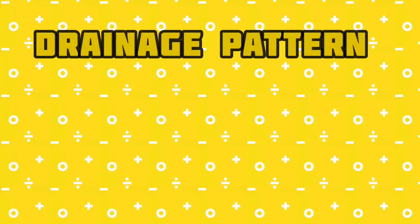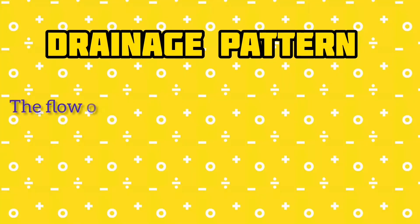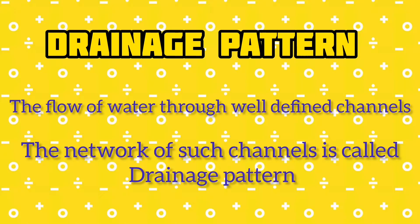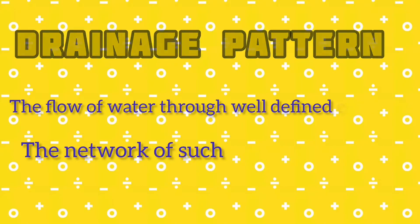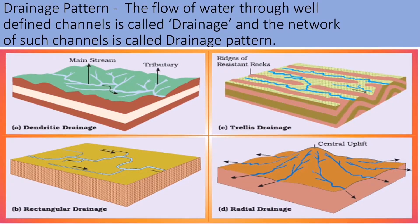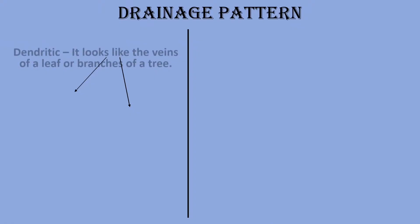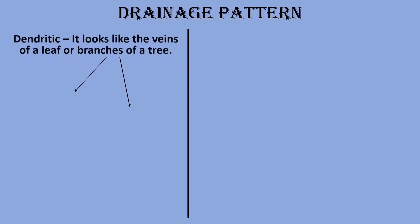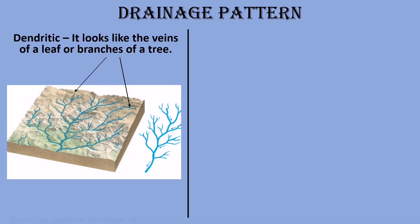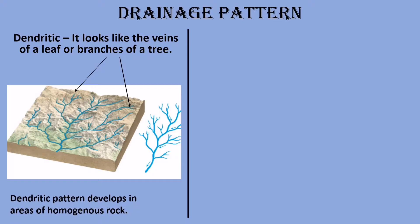The next important topic is drainage pattern. What is drainage? It is the flow of water through well-defined channels. Such a network of channels is called a drainage pattern. We have four main drainage patterns for the exam. First: dendritic drainage pattern — it looks like the veins of a leaf or branches of a tree. This pattern usually develops in areas of homogeneous rock.